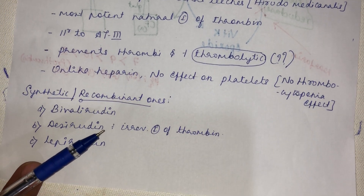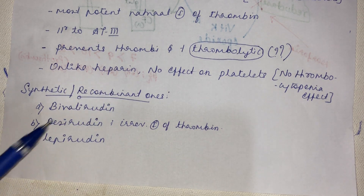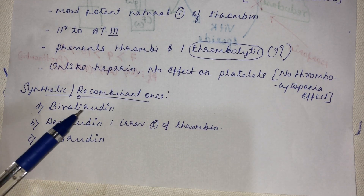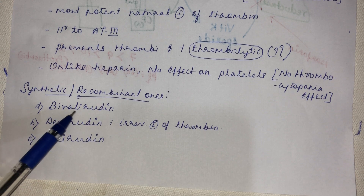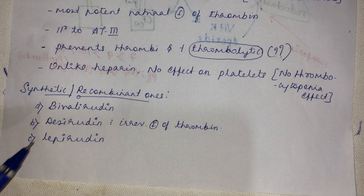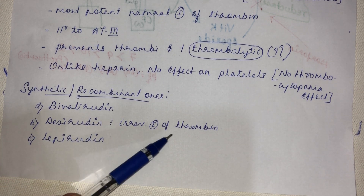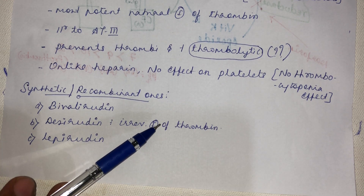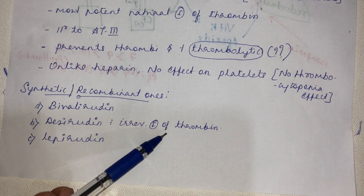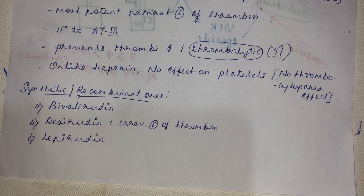Synthetic forms of hirudin are produced recombinantly. Examples include bivalirudin, desirudin, and lepirudin — all with the suffix '-rudin.' Desirudin is an irreversible inhibitor of thrombin, meaning a new thrombin must be synthesized for further coagulation to occur.